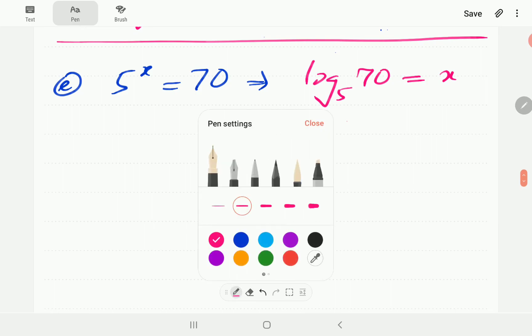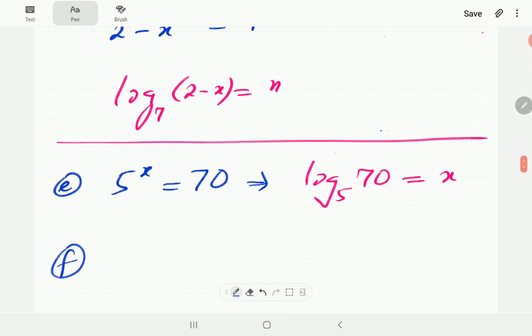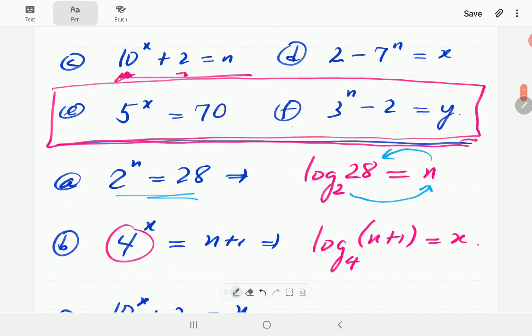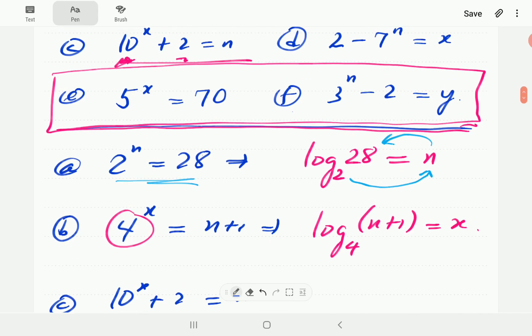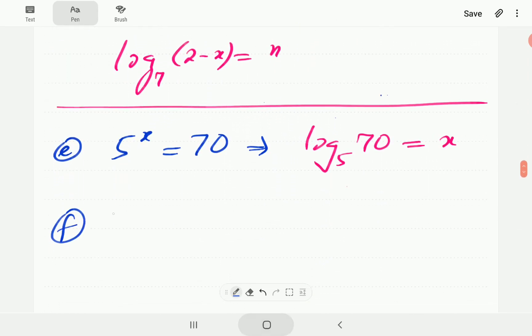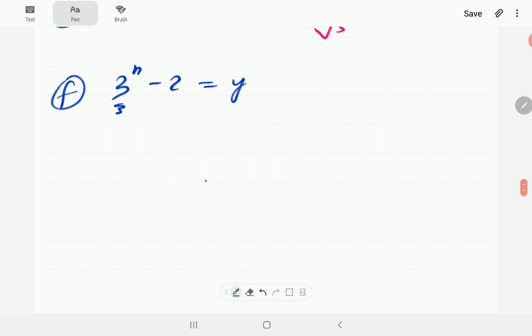And then for f, we are going to need to manipulate this algebraically a bit before we convert. We have 3 to the power of n minus 2 is equal to y. We need to isolate the exponential term first. So this is going to be 3 to the power of n is equal to y plus 2.